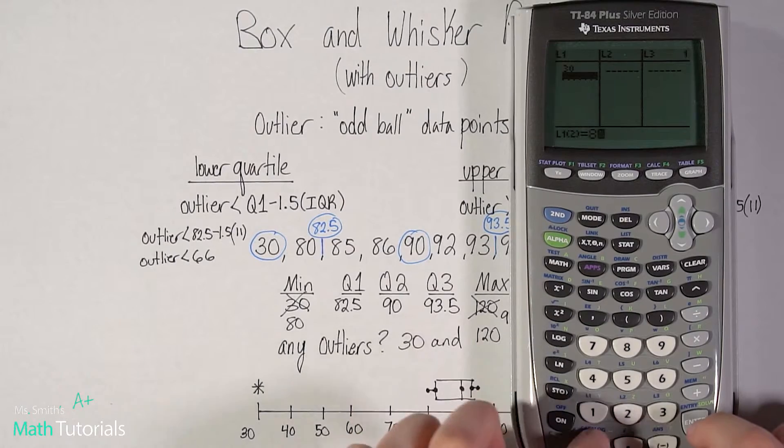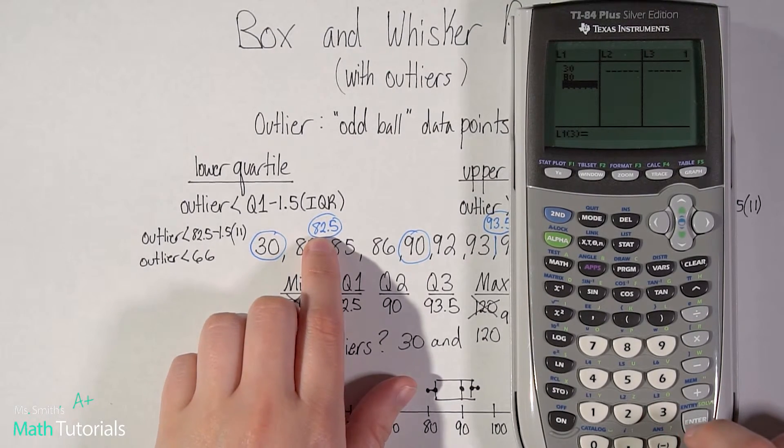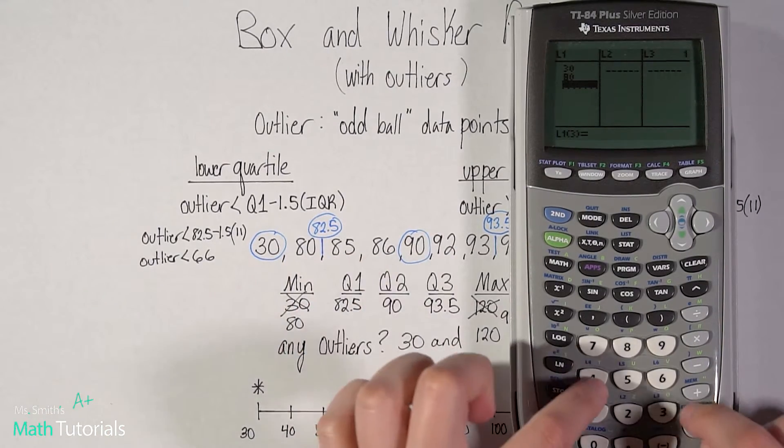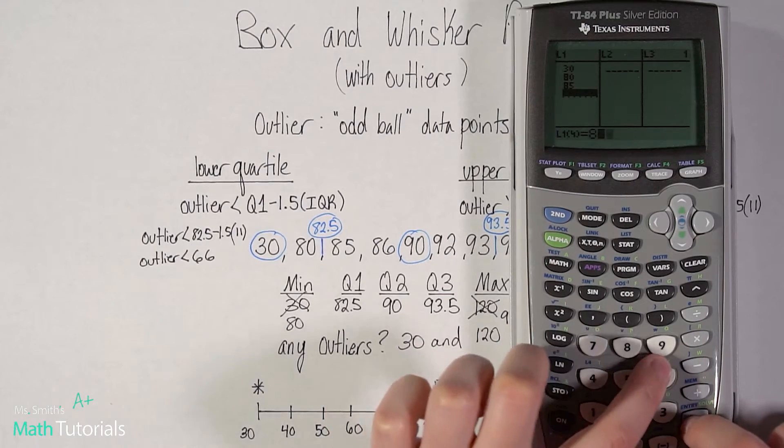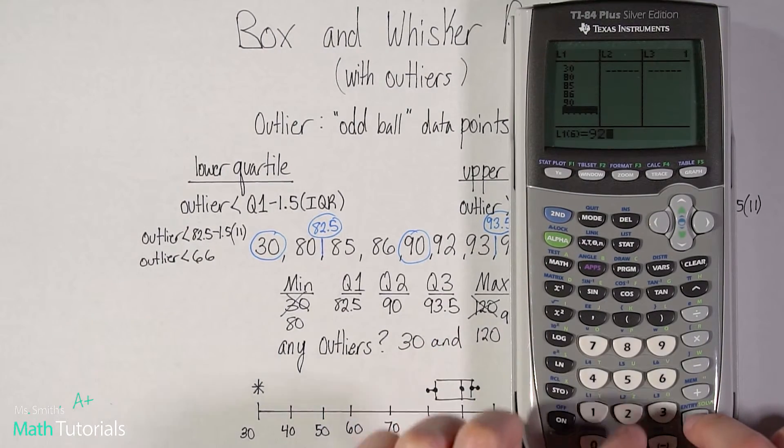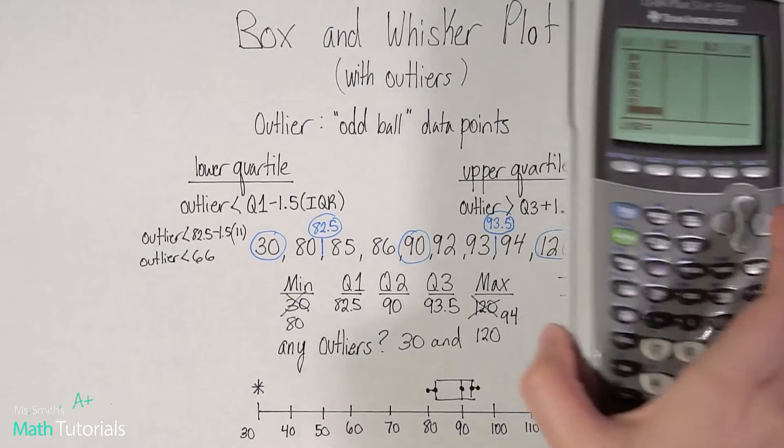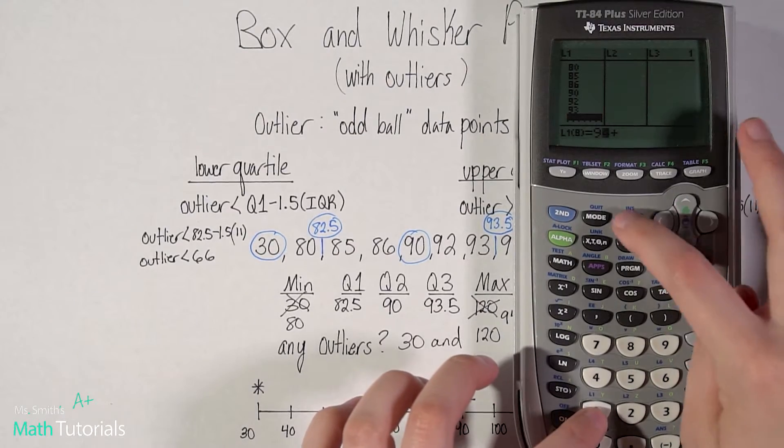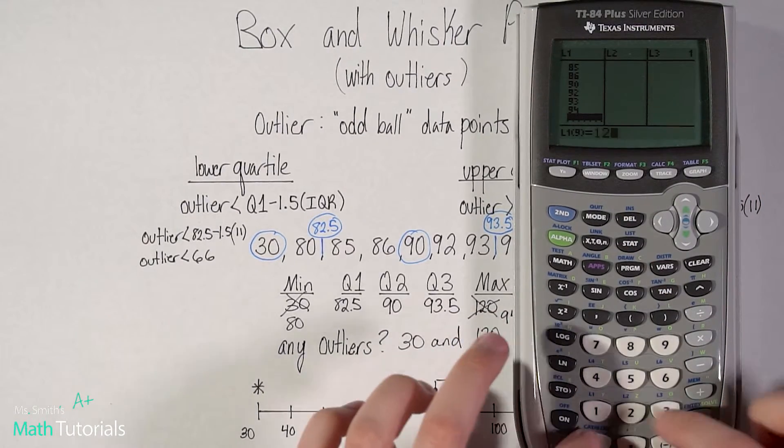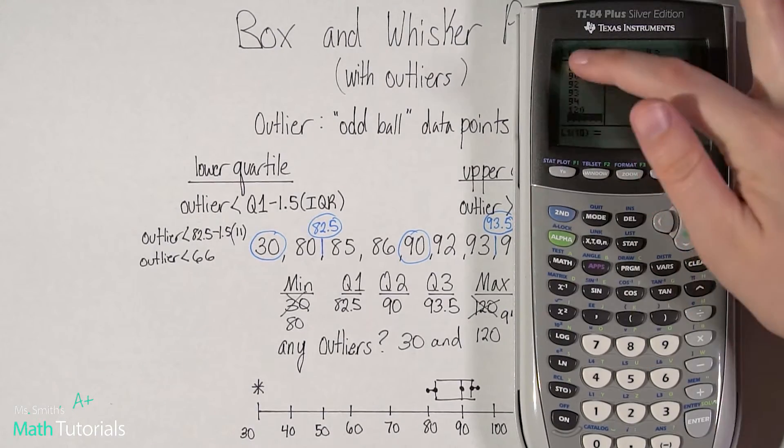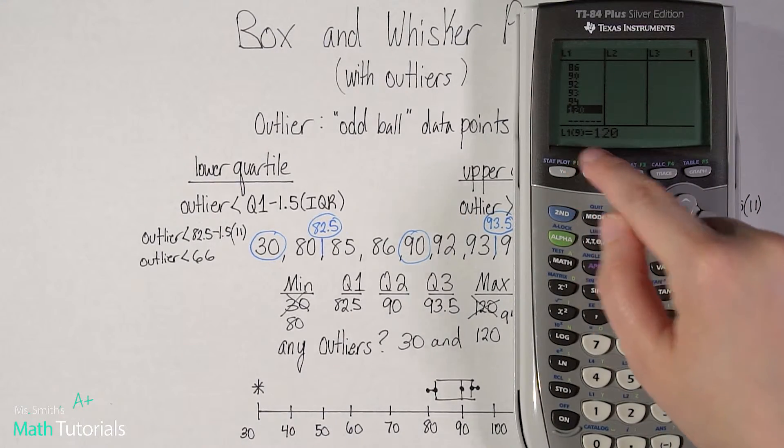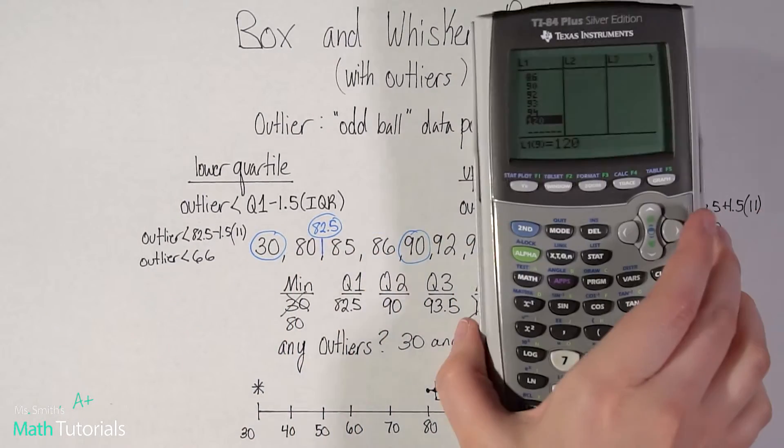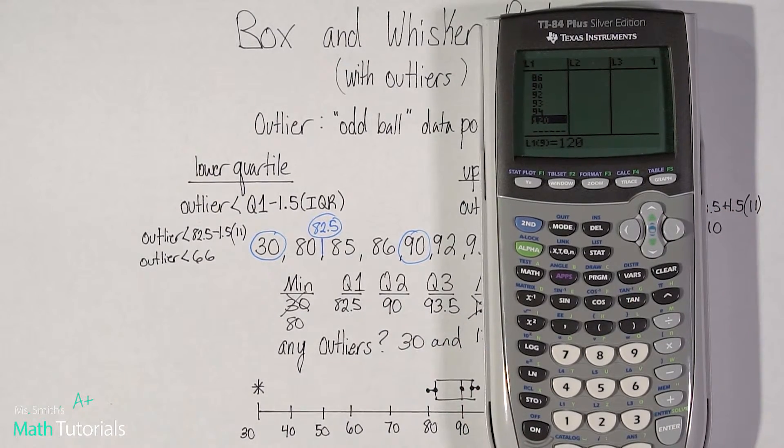So I've got 30, 80. Now I don't include that. That was not part of the data set, just so you know. We're only including the original data. 85, 86, 90, 92, 93, 94, and 120. So once you've got all your data in, I should have nine points. I'm just going to double count to make sure: one, two, three, four, five, six, seven, eight, nine. Yep. I can feel good that I got all of them in there.